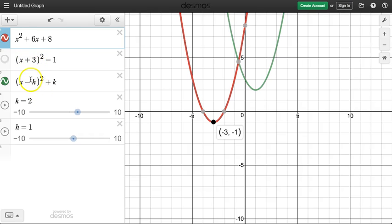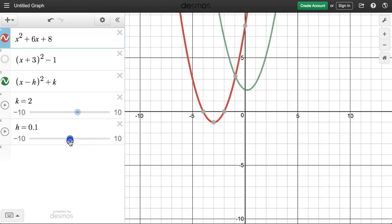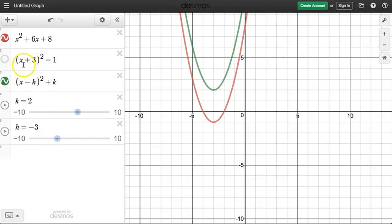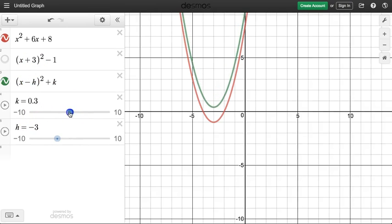Notice our y value for the vertex was negative 1 and here I have a minus 1. Now the h value and the x coordinate are actually opposite. So as you can see, as I move this, it slides it left and right. So if I wanted to have the same vertex as the red line, I need to move you to a negative 3 because that's basically opposite. Minus a negative 3 is plus 3. And then I got to slide you down to, boom, right there.